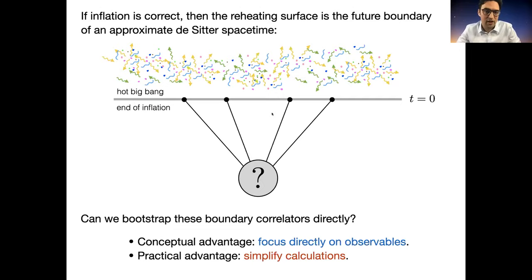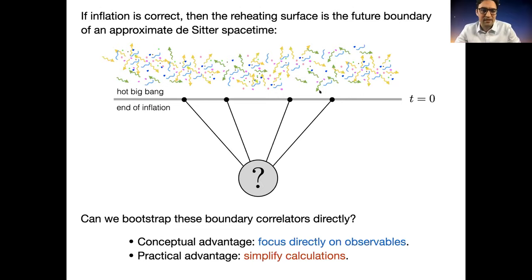Computing these correlations is complicated for the same reasons that scattering amplitudes are hard to compute using Lagrangian methods — especially in gauge theory and gravity, where there are unphysical gauge degrees of freedom that don't affect the final answer. Just like in scattering amplitudes, we'd like to make use of the fact that on-shell physical observables at late times are simpler than the off-shell Lagrangian description suggests. This has the conceptual advantage of focusing directly on observables, and the practical advantage of dramatically simplifying calculations by describing everything on this final surface with no reference to bulk evolution.